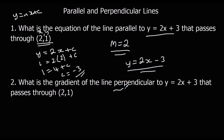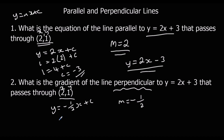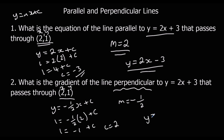Now for a line perpendicular to y equals 2x plus 3 through (2, 1). The gradient — we have to flip and minus. So the gradient is minus a half. We've got y equals minus a half x plus c. Substituting in x equals 2 and y equals 1: 1 equals minus a half times 2 plus c, which gives 1 equals minus 1 plus c, so c is 2. Therefore y equals minus a half x plus 2.